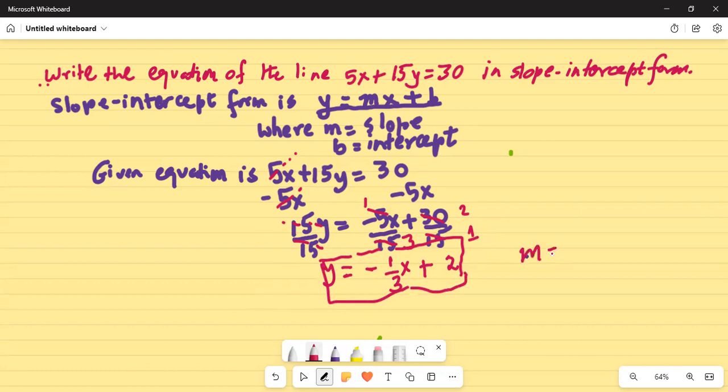So the slope-intercept form of this line is y equals negative 1/3x plus 2, where my slope m is negative 1/3 and the intercept is 2.